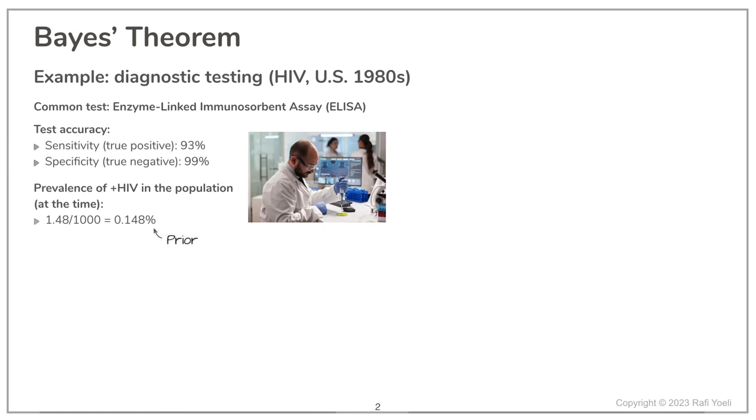In Bayesian statistics this data is called the prior. Our task in this exercise is to answer the question: What is the chance that a person who has just tested positive on ELISA is indeed infected with HIV?